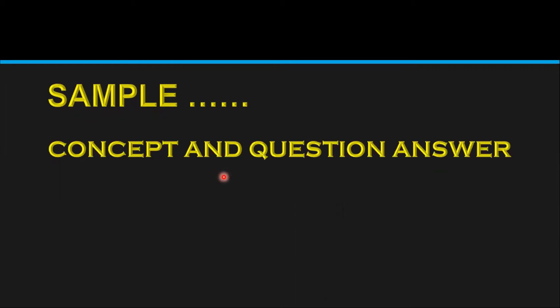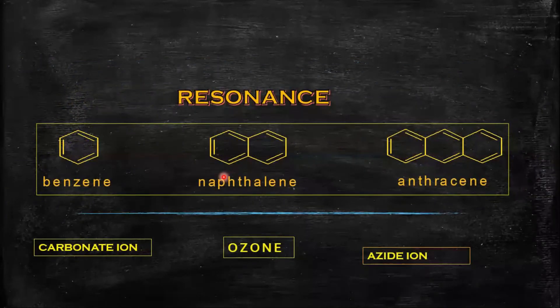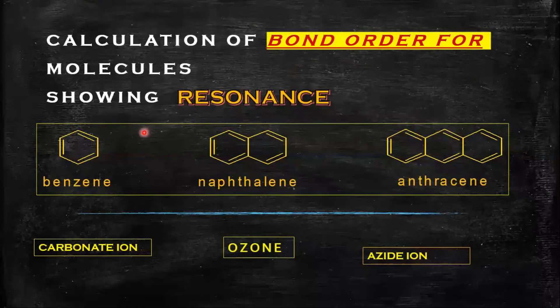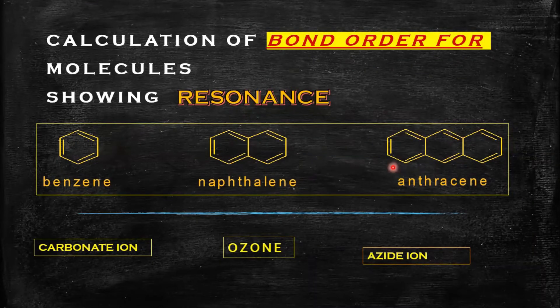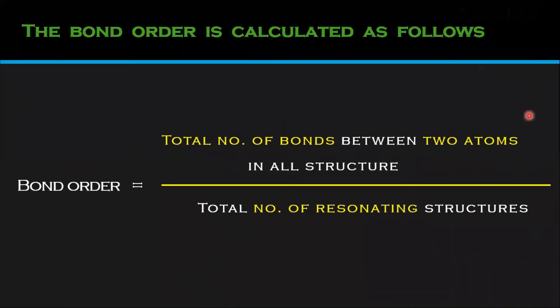I assure you this series will help you. I will give a sample topic today. We know bond order is calculated using a chemical bonding formula. Here I will discuss bond order for resonance structures — resonance structures like those of benzene, naphthalene, and anthracene. So how do we determine the bond order for a resonance structure? The formula is: total number of bonds between two atoms in all resonance structures divided by the total number of resonating structures.